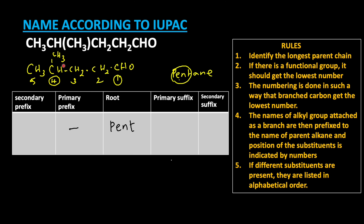The methyl group is the substituent, so the substituents are considered as a secondary prefix. At the fourth position we have methyl, so we write '4-methyl' as the secondary prefix. Now for the primary suffix: this compound has no double or triple bond — all single bonds — so the primary suffix is '-an'. Now for the secondary suffix: the aldehyde group is present, so it is represented as '-al' in the secondary suffix. Primary suffix '-an' and secondary suffix '-al'.